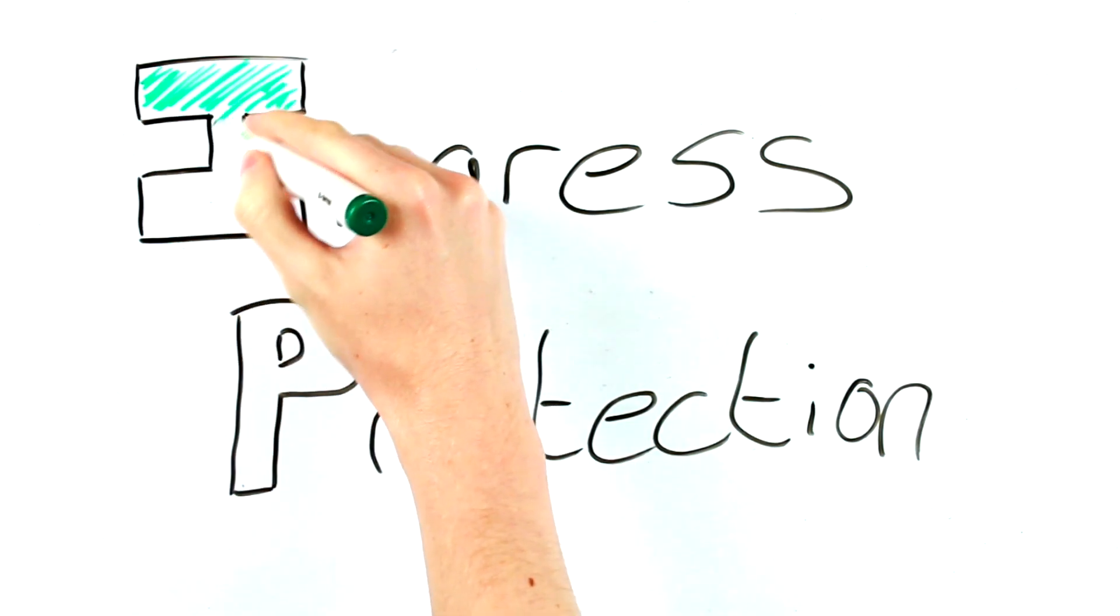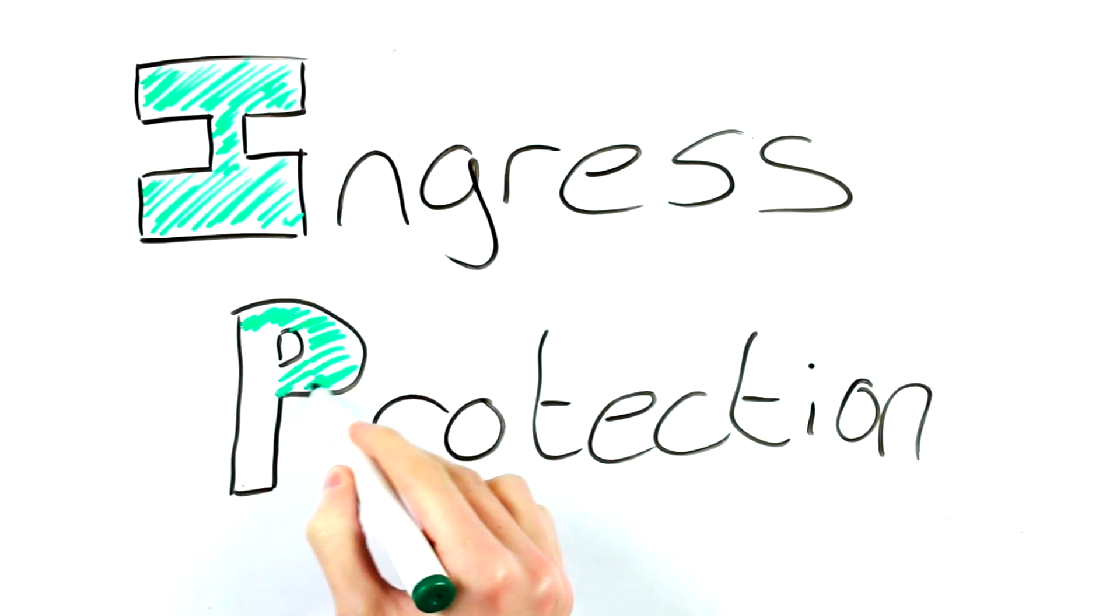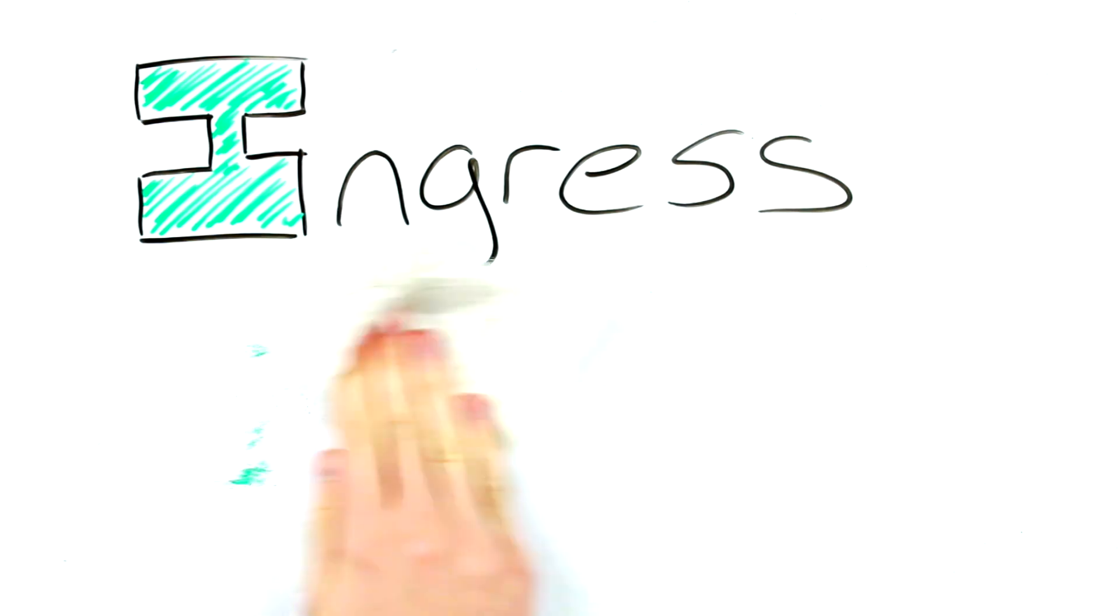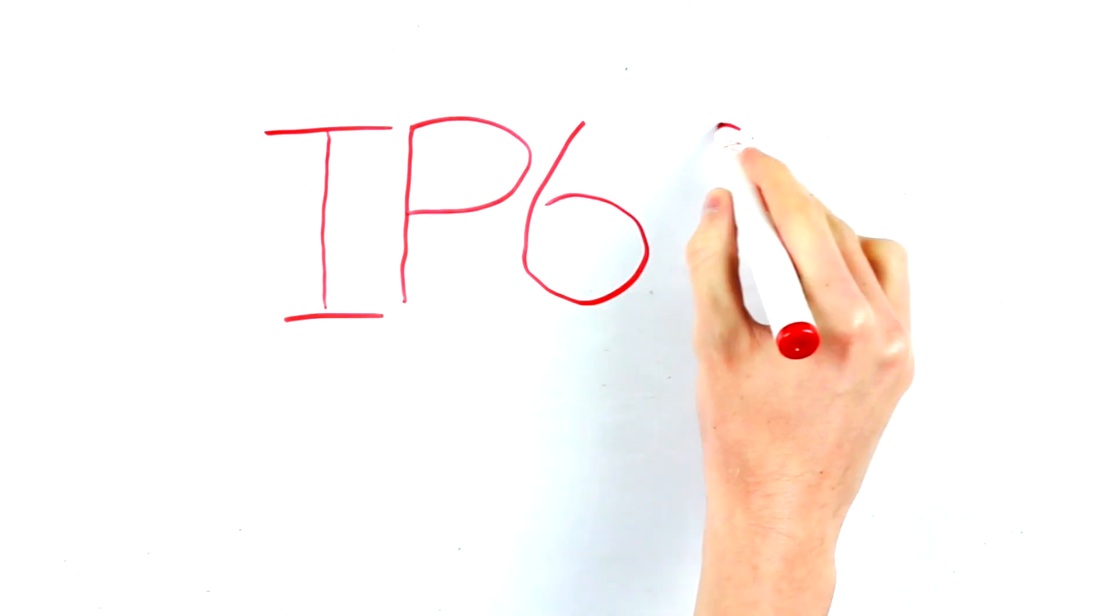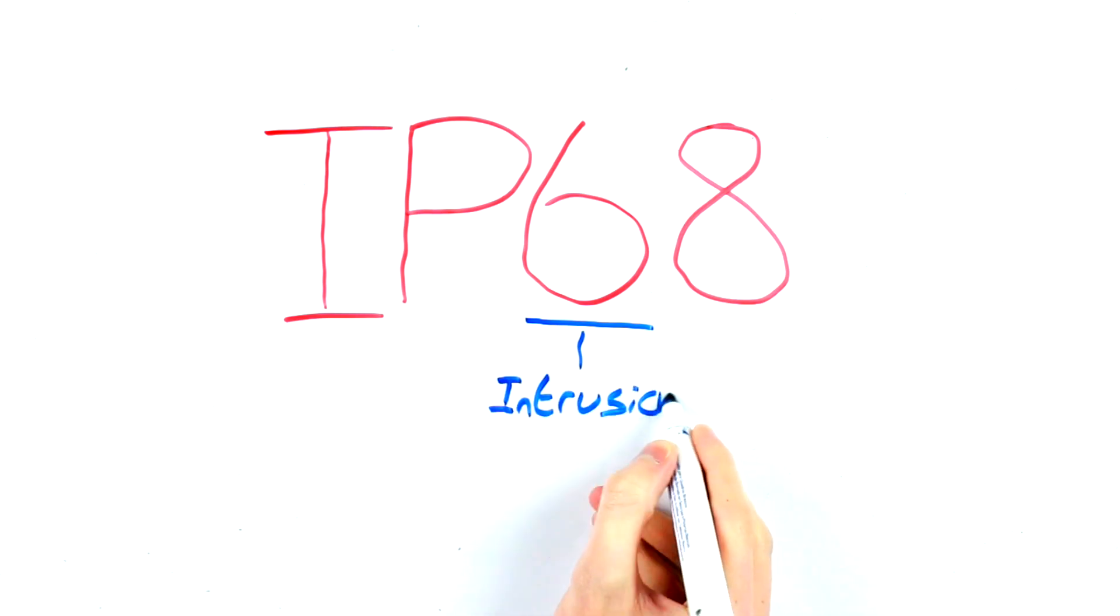Ingress Protection. Ingress Protection is an international standard used to indicate the degree of protection provided by enclosures for electrical equipment. You'll see it shortened on camera spec sheets to IP followed by two numbers, for example IP68. The first number is the camera's protection against intrusion and the second number is the camera's protection against water.